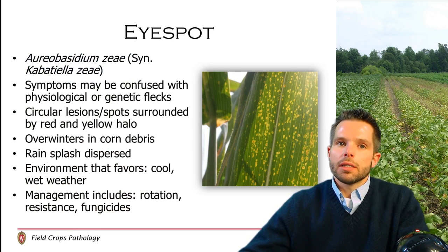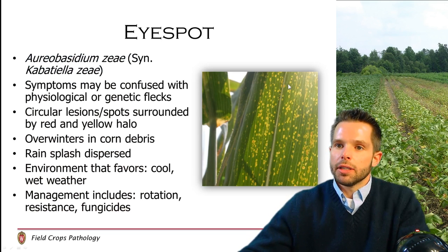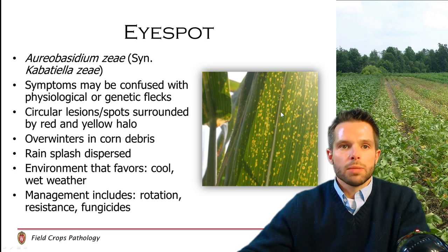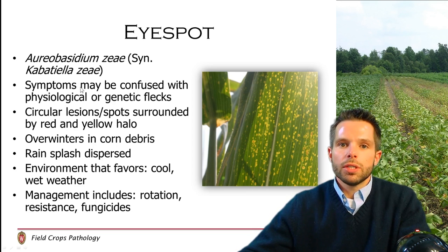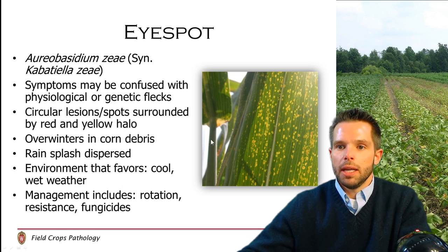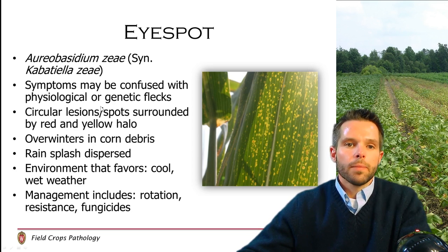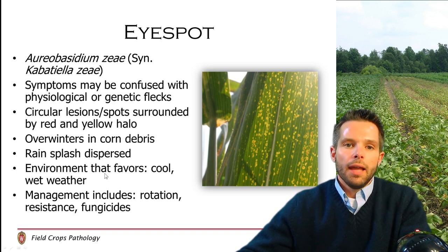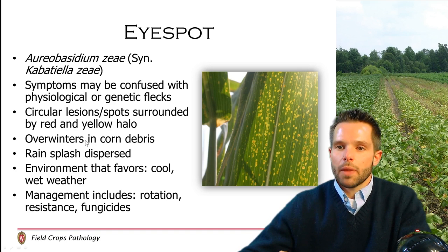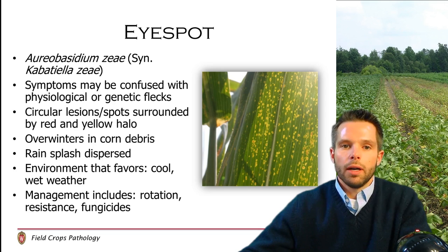Shifting to another fungus which causes disease on corn, we have eye spot. You can see the disease symptoms on a corn leaf in this photo, and you can see where it gets its name — it sort of looks like an eyeball with each of these spots. The eye spot pathogen symptoms can be confused with physiological or genetic flecking which can occur in some hybrids, so you need to be familiar with certain hybrids to be sure you're not looking at a genetic disorder. These lesions will typically have a red spot in the middle with a yellow halo, and the fungus that causes eye spot overwinters again in corn residue.